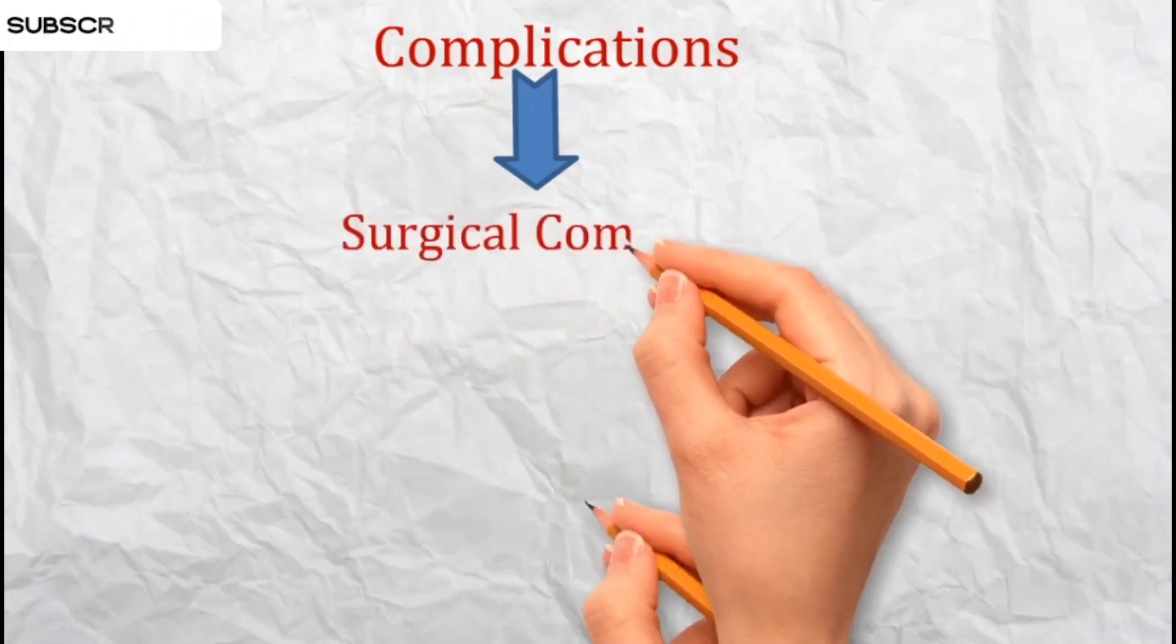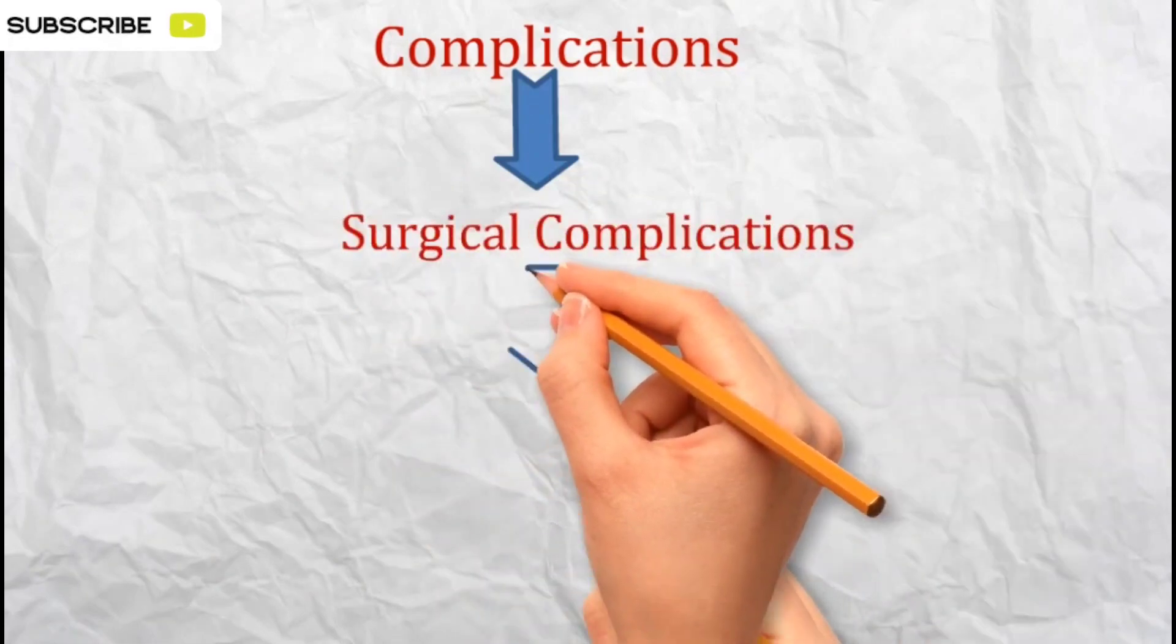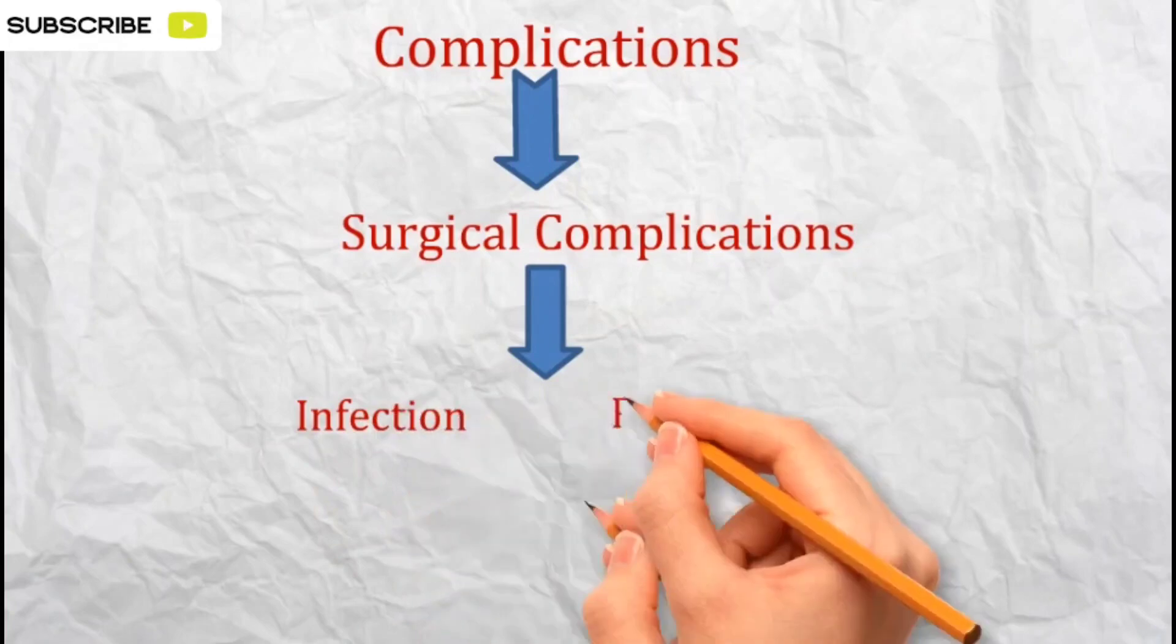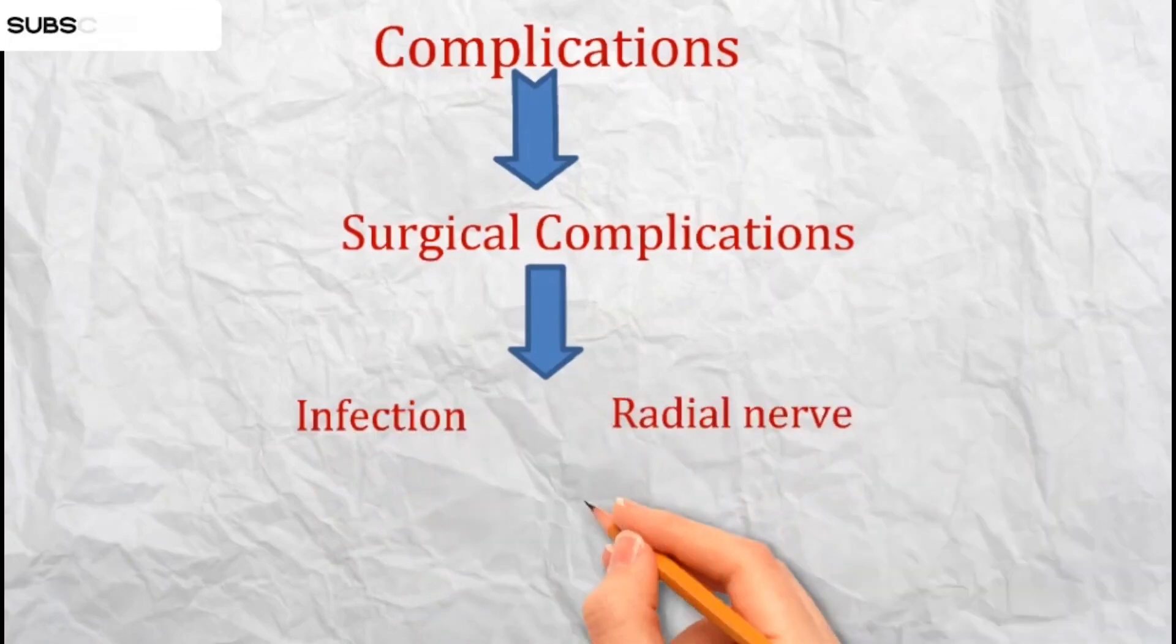Surgical complications: surgical procedures carry their own risks, including the possibility of infection and injury to the sensory branch of the radial nerve.